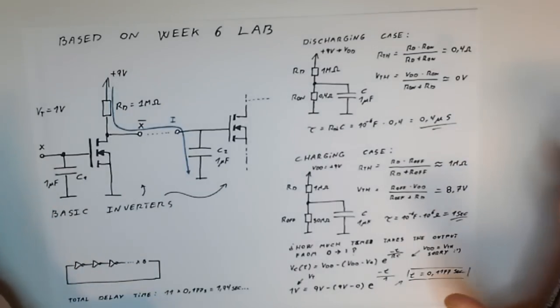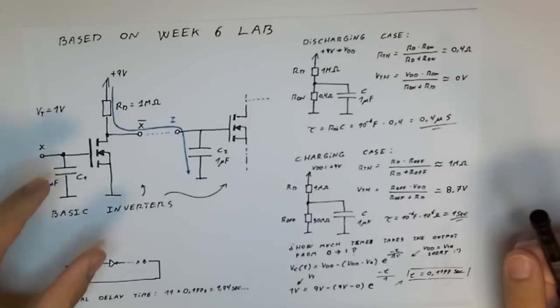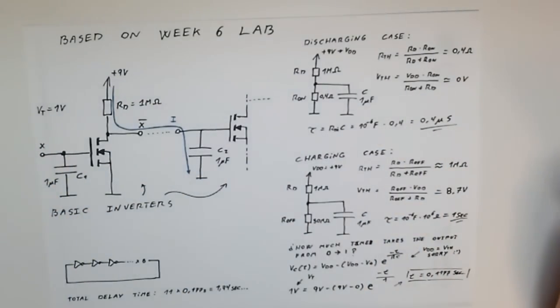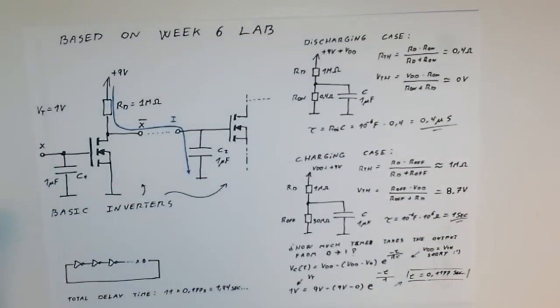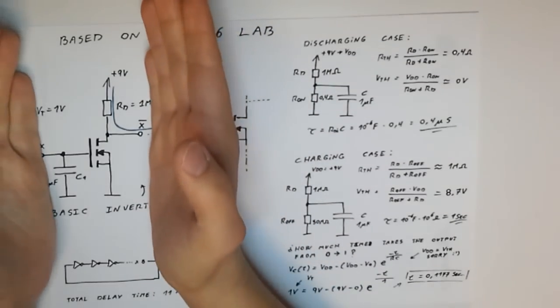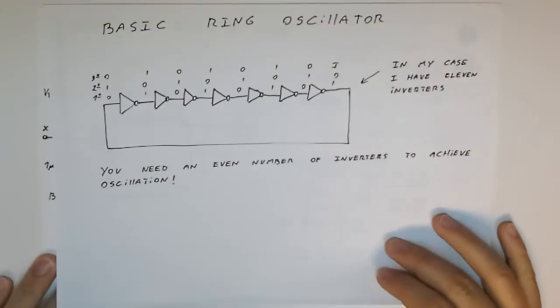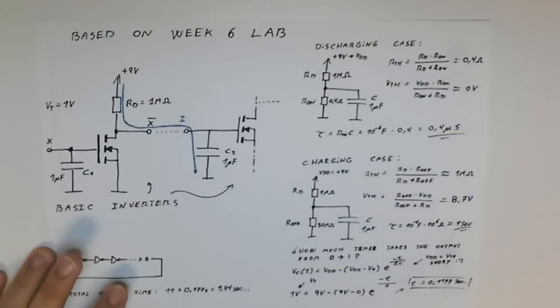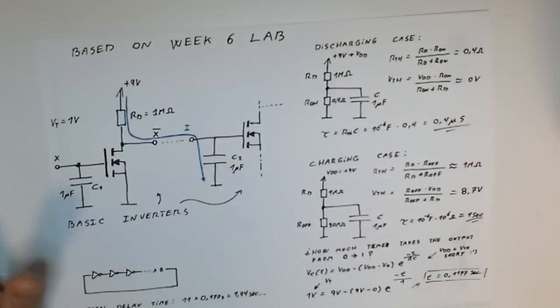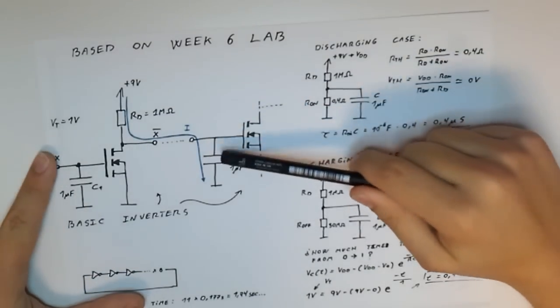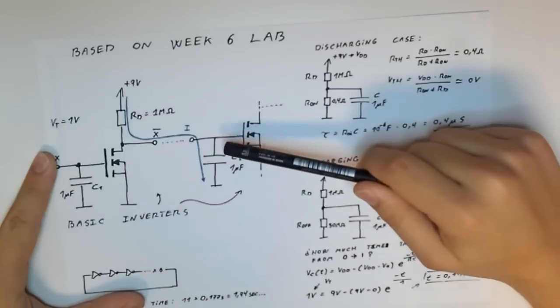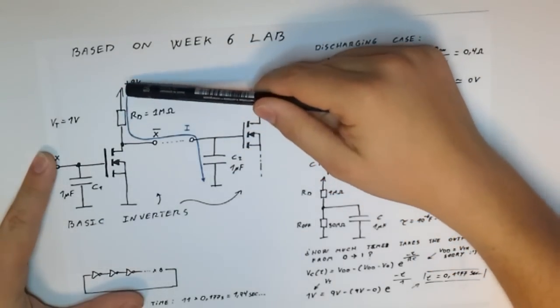I needed a big capacitor because I was looking for a delay time that would let me see the oscillation with the naked eye without an oscilloscope. So I decided to use a 1 microfarad real capacitor that I put on the gate of each MOSFET transistor. Each inverter is connected in series with another inverter like in this diagram, so this gate capacitor is charged by this drain resistor this way and is discharged through this way.